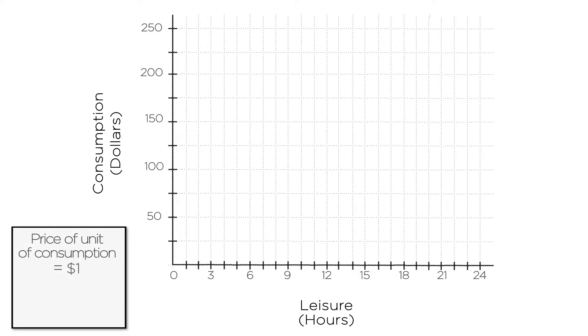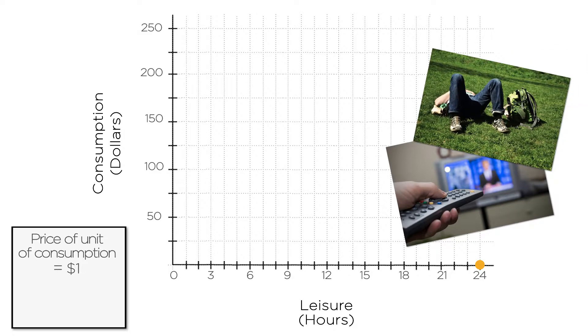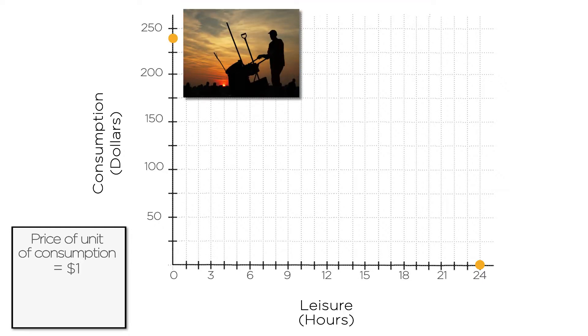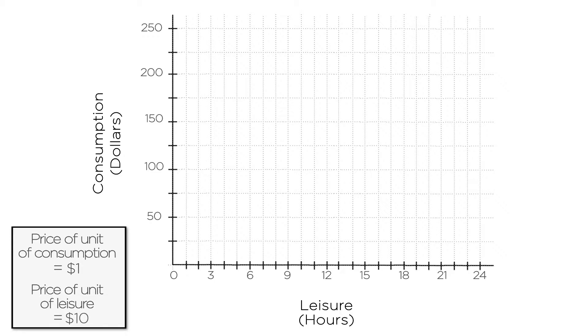Now that we know the price of a unit of consumption and the price of leisure, and we know there are only 24 hours in the day to split between leisure and working for a wage, we can draw the budget constraint. One extreme is that you could spend all 24 hours a day on leisure. Maybe watching some TV, taking some naps. Sounds nice, right? Well, if you spend all 24 hours of your day on leisure, you don't make any money from work and you get zero consumption. Good luck paying the cable bill. The other extreme is that you spend no time on leisure and you work all 24 hours a day. Sounds a bit intense, but you could earn some good money during that time. Let's say the wage is $10 an hour. If you work 24 hours, you make 24 times 10 or $240. You could use all this $240 on consumption.